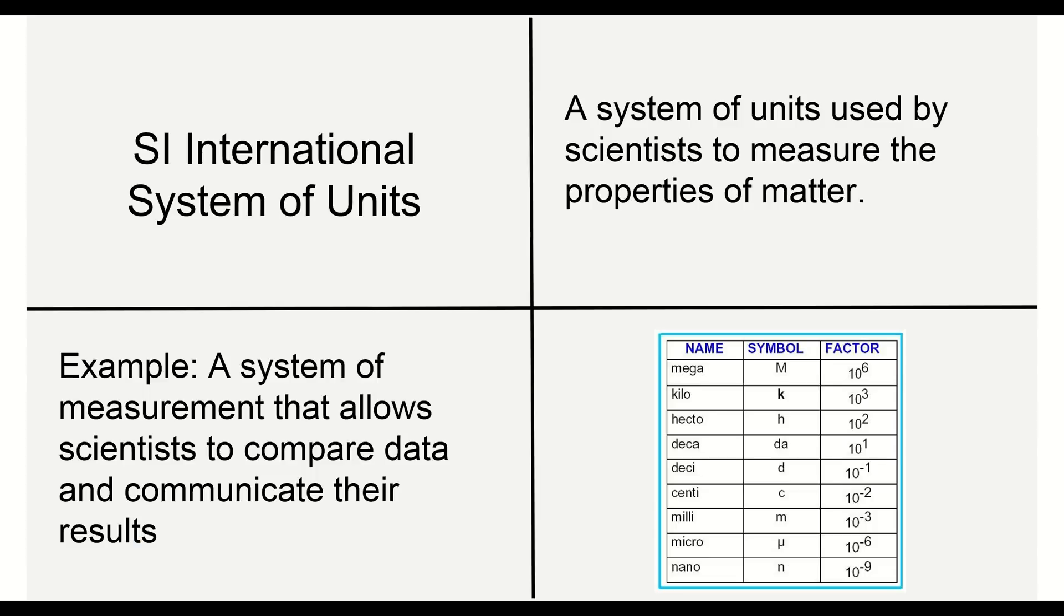For example, it's a system of measurement that allows scientists to compare data and communicate their results. It's really important that we report numbers in a common way and common language. If we all reported everything in different ways it'd be really hard to tell what we're meaning, just like if we had a room full of 10 different people who all spoke a different language it could be really hard to communicate.